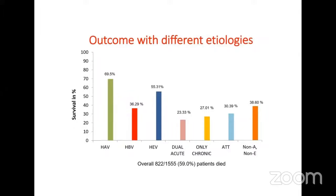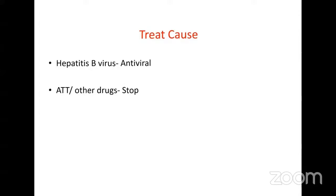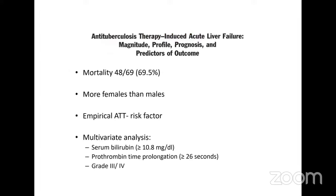Regarding outcomes by etiology: hepatitis A has the highest survival rate. ATT-related liver failure has very low survival of 30 percent. HBV reactivation has a survival rate of approximately 36 percent. In cost-specific treatment, for hepatitis B we start antivirals; for ATT-induced liver failure we stop ATT and modify the regimen. ATT-induced liver failure has a mortality of 69.5 percent and is more common in females.